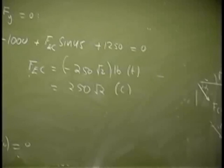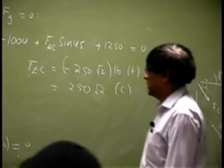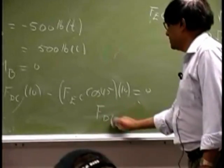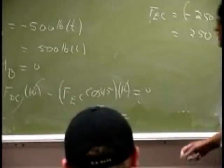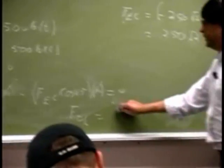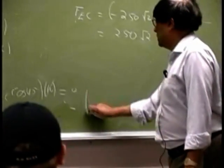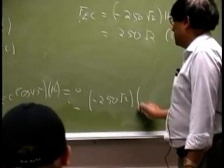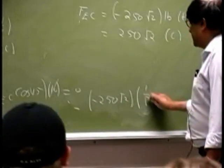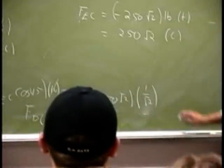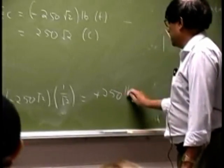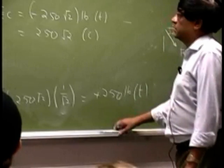So it gives you the force FEC. I can come back here and solve for FDC. This will cancel and you have negative 250 root 2 and then you have 1 over root 2. So it gives you a positive 250 pounds and that remains in tension.